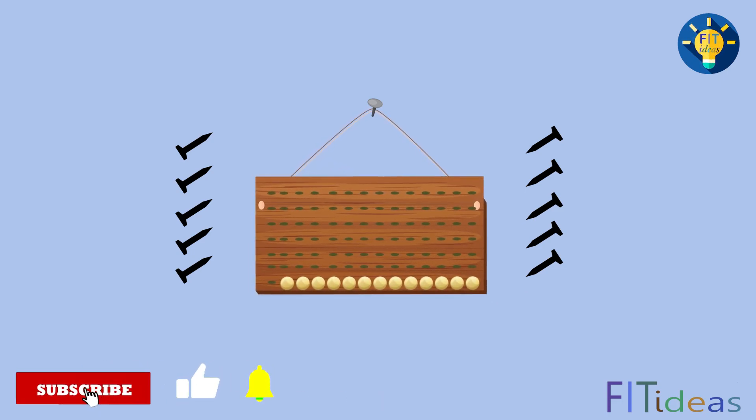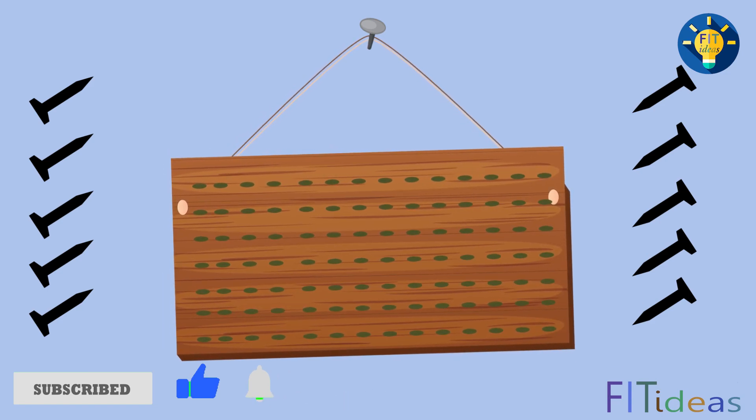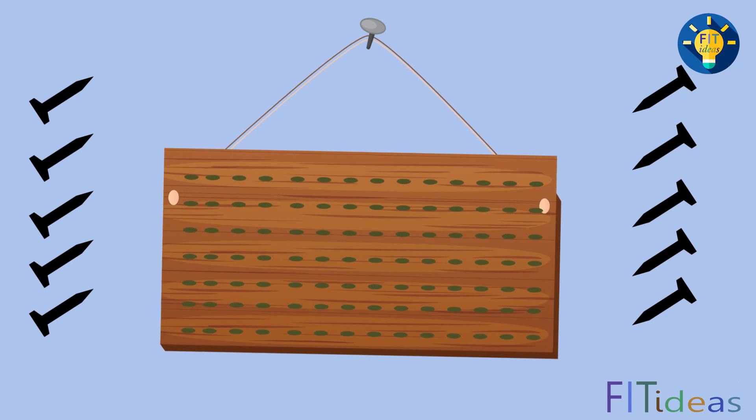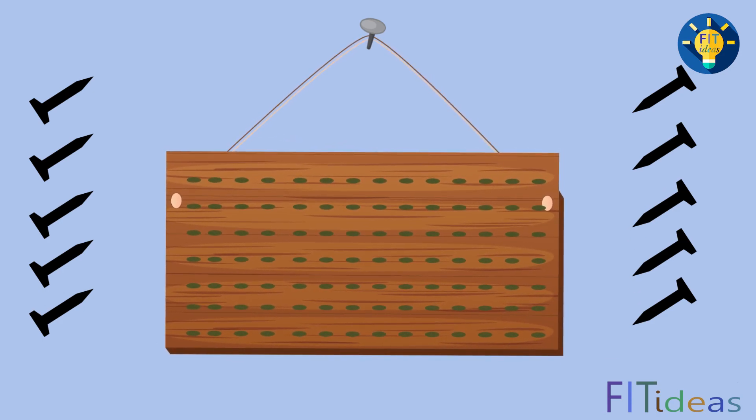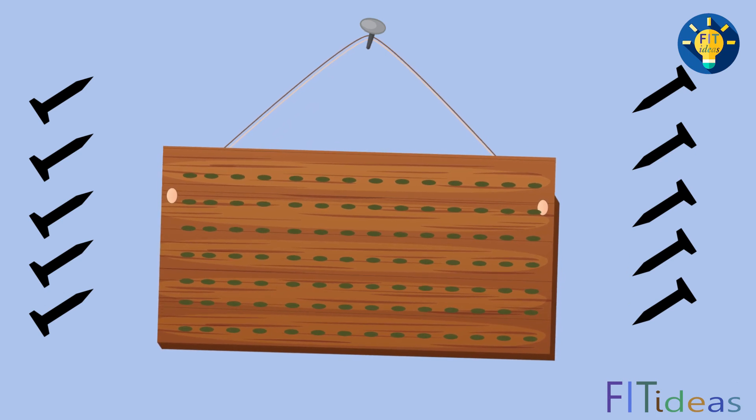He was happy again and went to his father. Then his father takes him very close to the wooden board and shows that no matter how many nails you have removed from here, the small holes that are visible, which have happened because of those nails, they can never fill.